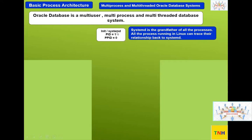Systemd becomes the parent process for all processes triggered after it. The parent process ID is called PPID and the process ID is called PID. In an operating system, every process gets a unique number for its process ID. Whenever a program starts, a process is triggered — that's how operating systems work. In Linux systems, the most initial process is systemd, which gets PID 1.